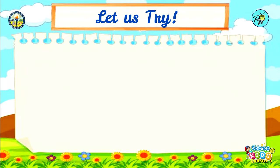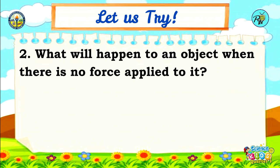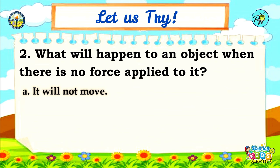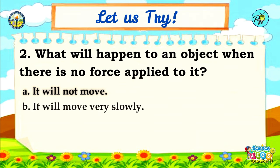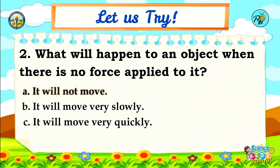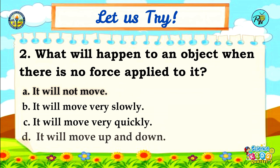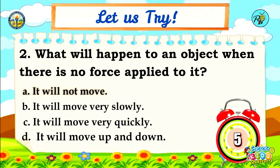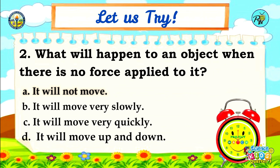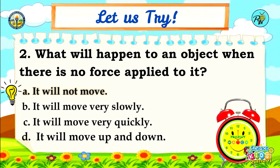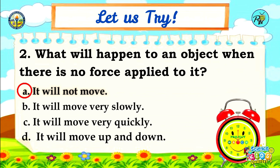Number 2: What will happen to an object when there is no force applied to it? A. It will not move, B. It will move very slowly, C. It will move very quickly, D. It will move up and down. Time is up! The correct answer is letter A — It will not move.